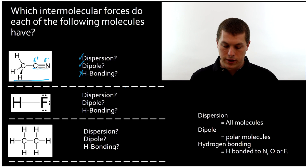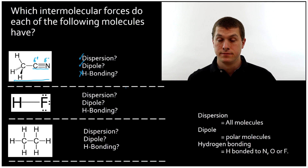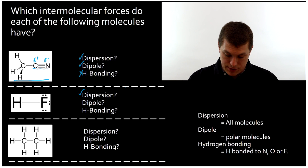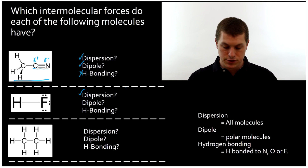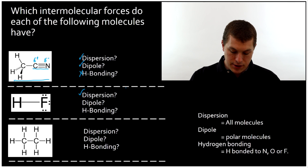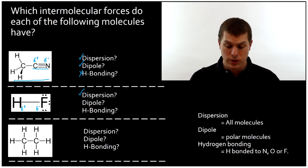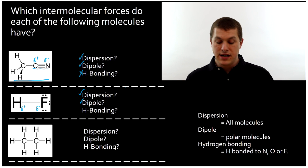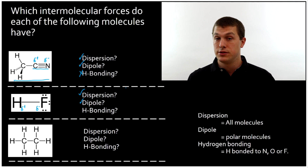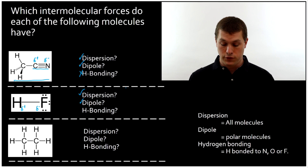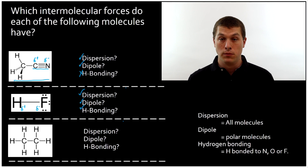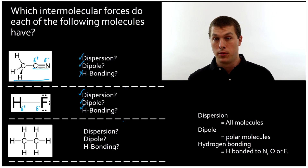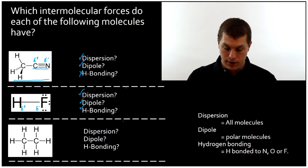Let's go to the second molecule — HF, hydrogen fluoride. Does it have dispersion forces? Once again, all molecules do, so of course it does. Does it have dipole forces? Well, it is polar — hydrogen is partially positive and fluorine is partially negative. Fluorine is the most electronegative element, so yes, it has dipole. Does it have hydrogen bonding? The answer is yes, because hydrogen is directly bonded to fluorine. So it basically has a super strong dipole moment, and this is going to tend to make it more attracted to other molecules like it than the weaker intermolecular forces.